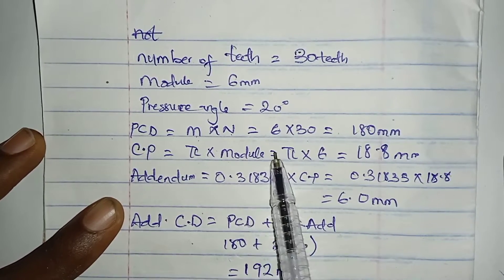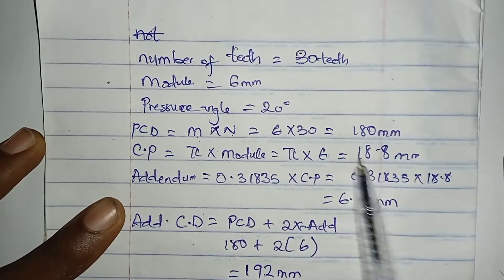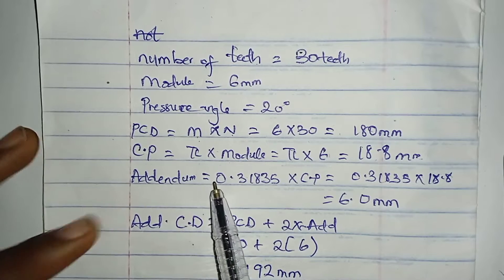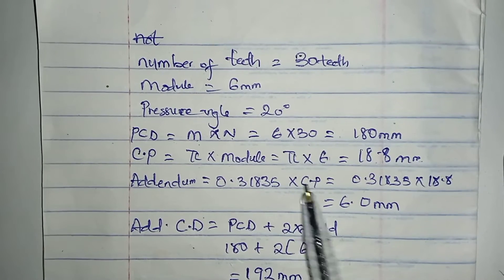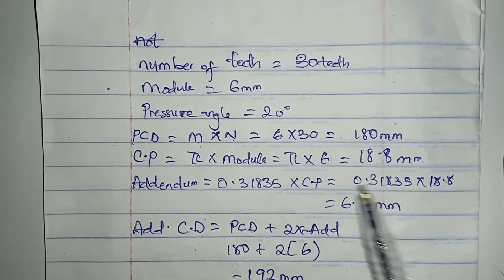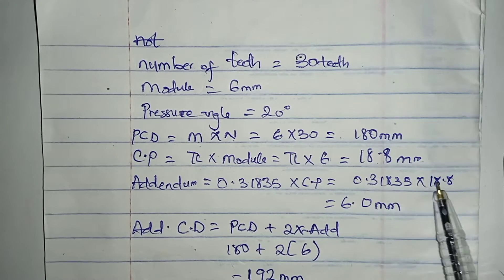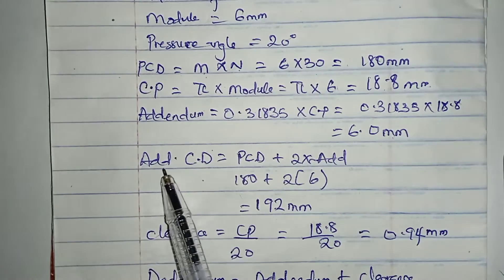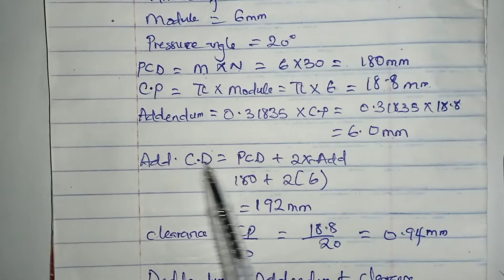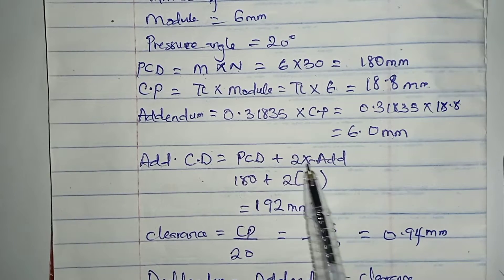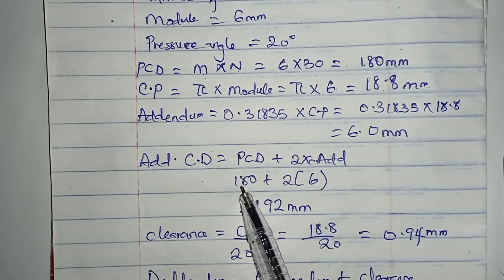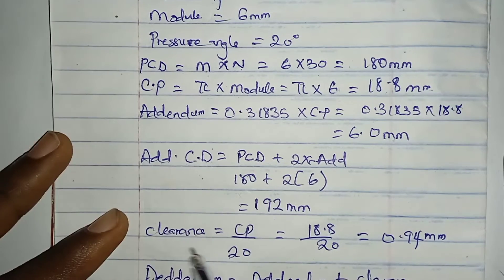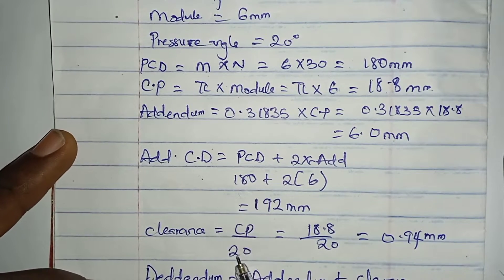Our circular pitch formula is pi times module, which is pi times 6, giving us 18.8 millimeters. Our addendum — formula 0.31835 times circular pitch — so 0.31835 times 18.8 gives us 6.0 millimeters. For our addendum circle diameter, we have pitch circle diameter plus 2 times addendum: 180 plus 2 times 6, giving us 192 millimeters.